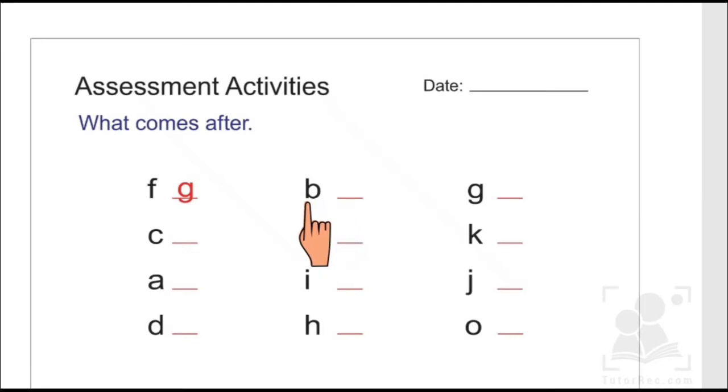So when we say A, B, C, it means C comes after B. Let's move on to the next letter.